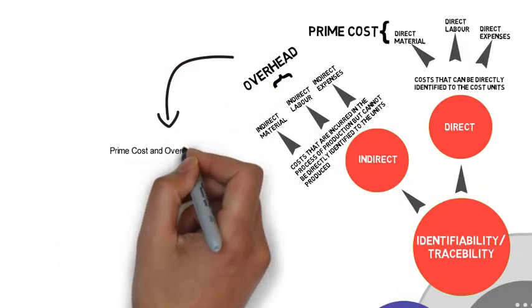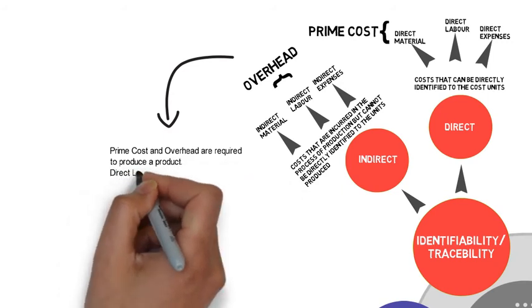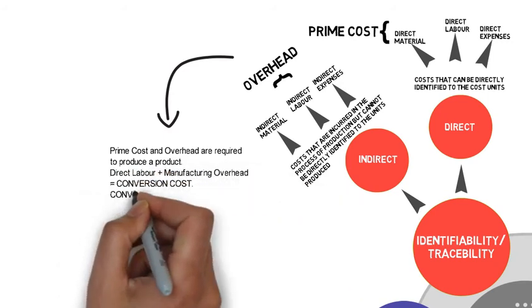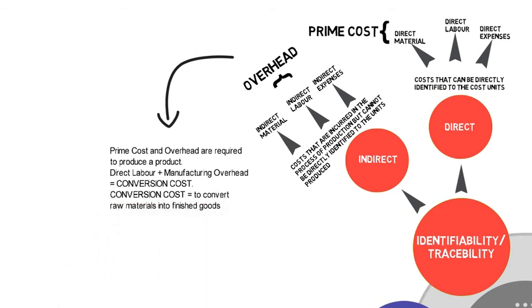Please note, prime cost and overhead are required to produce a product. Direct labor plus manufacturing overhead equals conversion cost, which defined as cost needed to convert raw materials into finished goods.